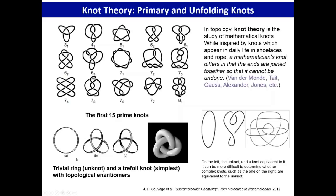The first simplest trefoil knot is called a trefoil knot. It is actually a mirror image of each other — there is chirality present. A simple ring is a trivial ring or an unknot. An unknot may have several crossovers, but if you can disentangle them without breaking a bond and they form a simple ring, then it is not a true knot.